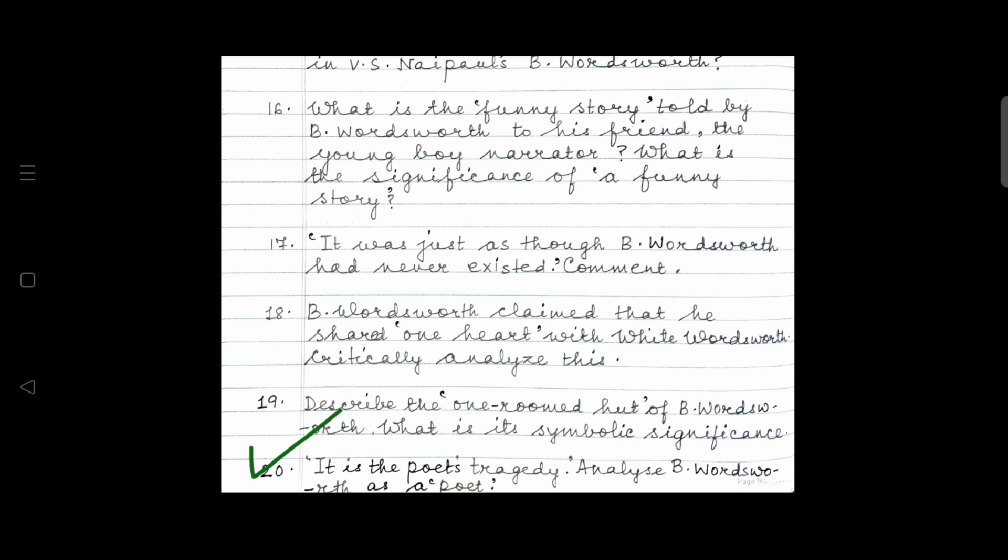Question twenty. The last one. It is the poet's tragedy. Analyze B. Wordsworth as a poet. Role of the artist and the poet. Alienation of the artist. Alienation of B. Wordsworth as an artist in the society in which he lives in. Is he a failed poet? Is he a poet? After all, we have not seen him writing any poem. We have just heard that he is writing one. Perhaps the greatest poem in the world. And on his deathbed, while he was on his deathbed, he confesses that the poem was not going well. He is a poet because the idea is the grade.